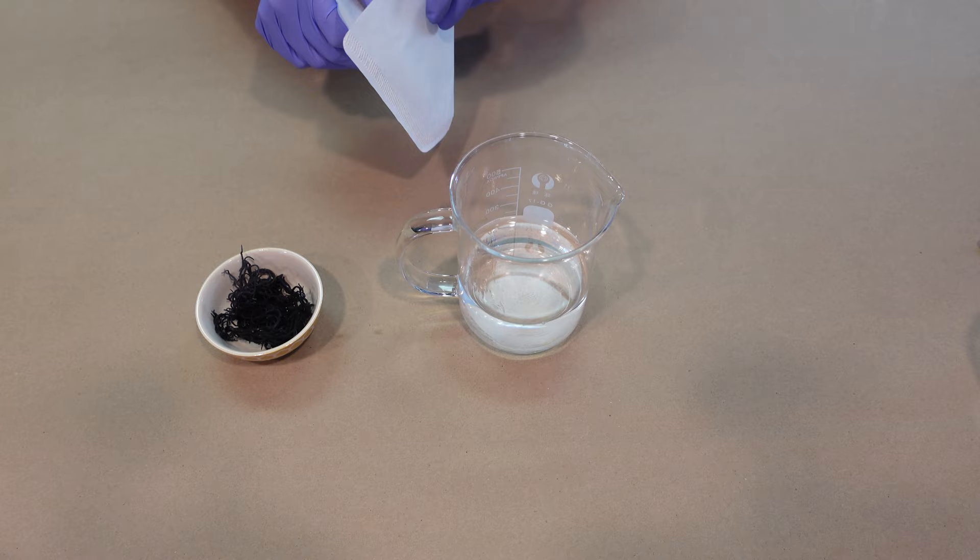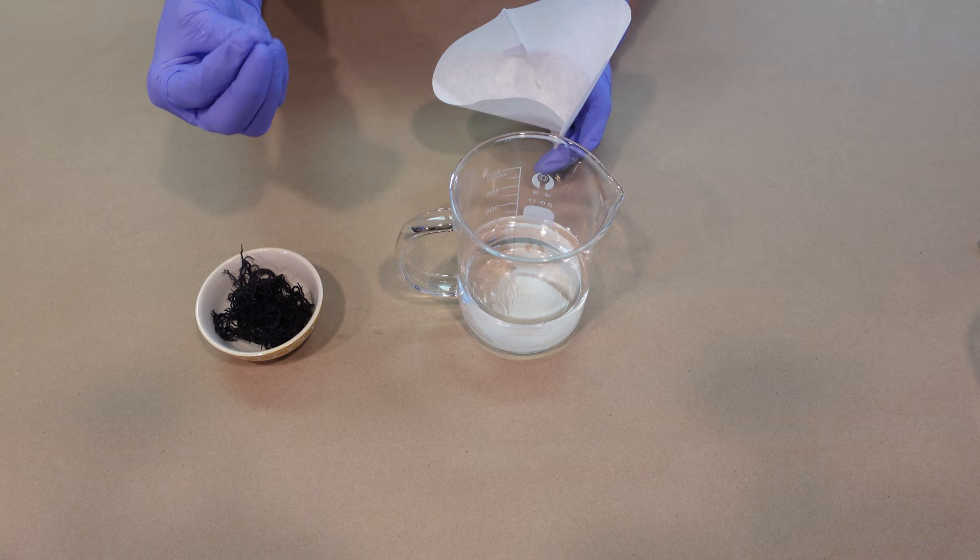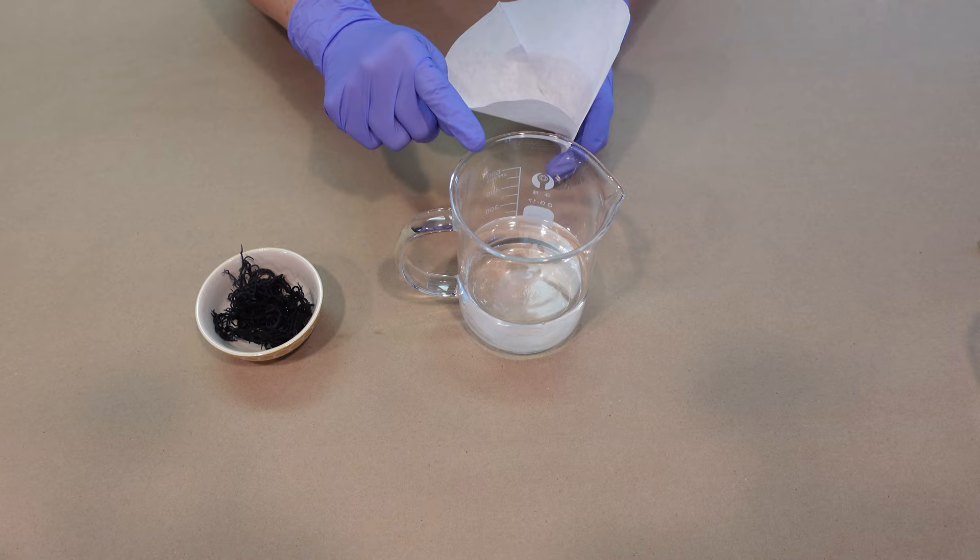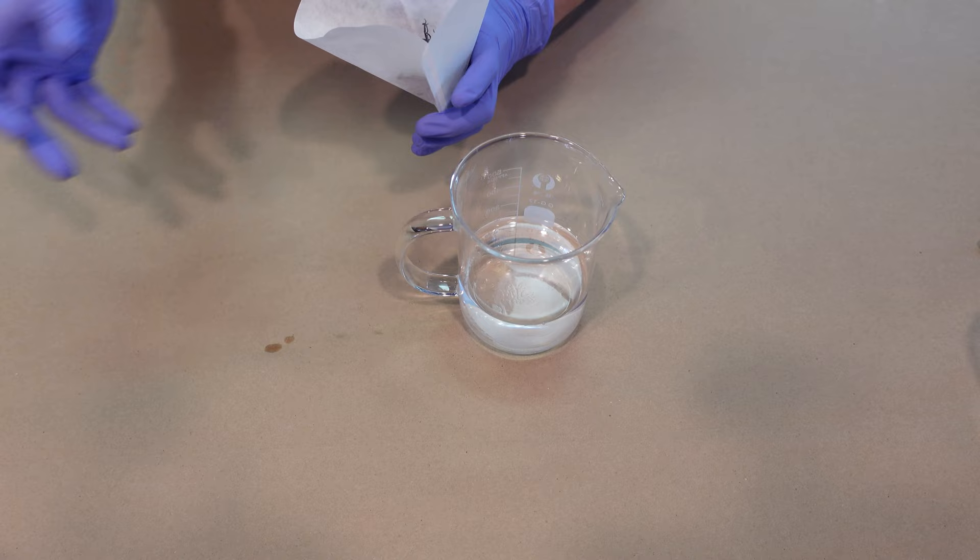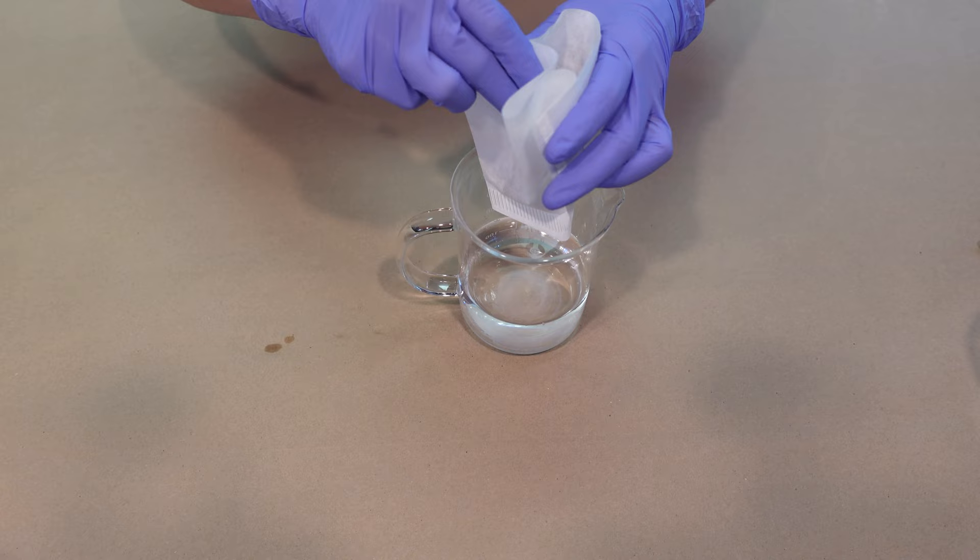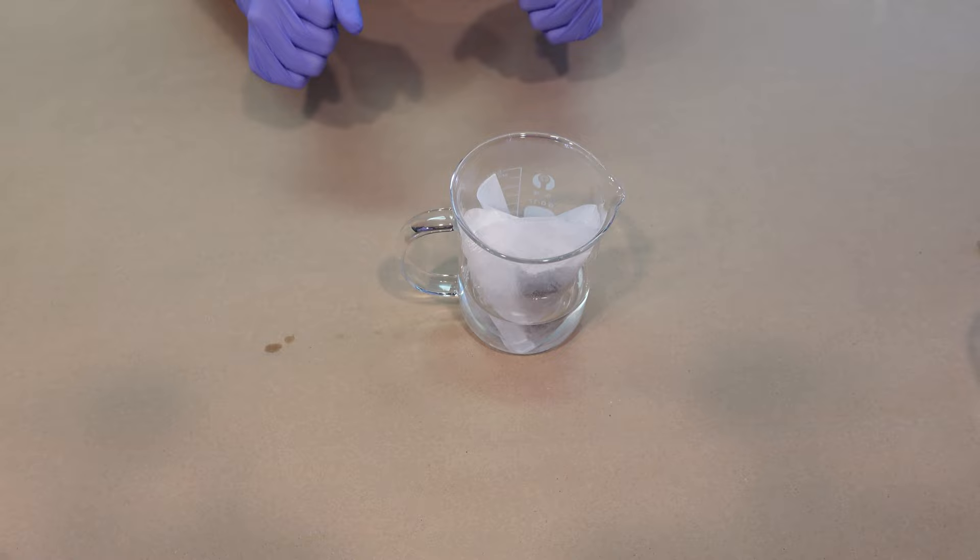What we're going to do is go ahead and place the sea moss into this coffee filter. The reason I'm doing that instead of just placing it directly in the water is once the sea moss comes into contact with the hot water, it starts to break down and render a little bit. I don't want this water to get too thick.